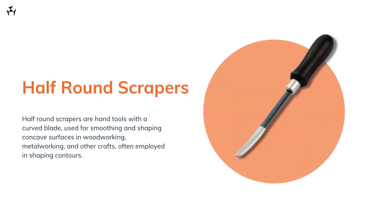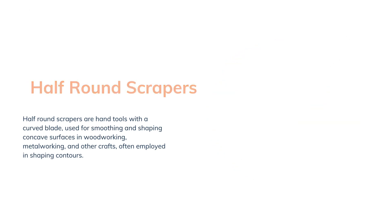Next is the half-round scraper. It's also known as a bearing scraper since it's used to scrape bearing surfaces. The half-round scraper comes in a shape that's like a half circle.